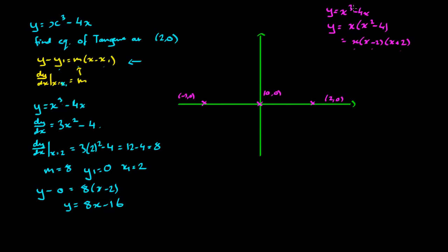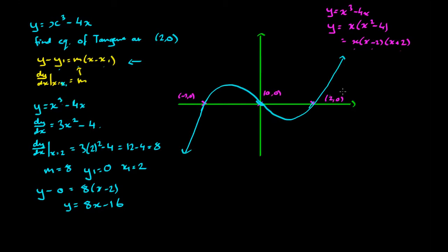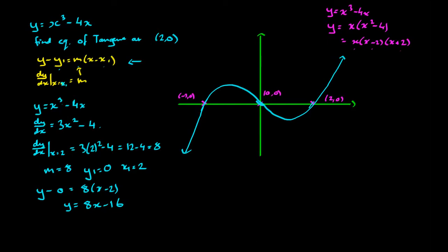I also notice that this is a positive cubic, so it's going to start low and end high. So we cut up through zero, down through 2, and up again — it looks something like that. Our question asked for the tangent at the point (2, 0), which is this point over here. Visually, if I drew a tangent in yellow at that point, it's going to have quite a positive gradient, with an intercept way down here likely at negative 16.